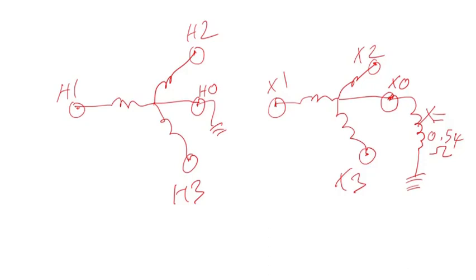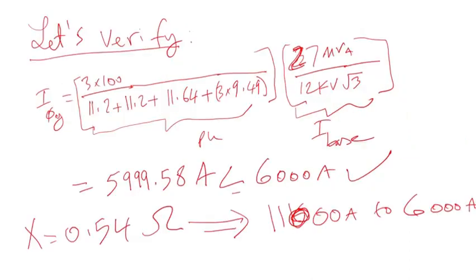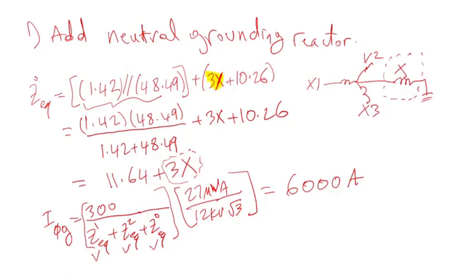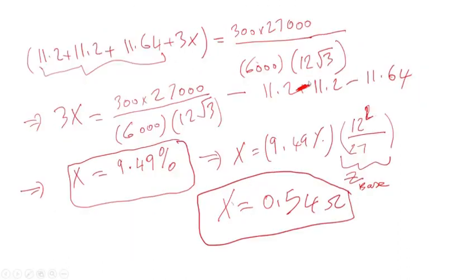Hello and welcome to Engineering Samples. In this video series, you will learn how to calculate the line-to-ground fault on the low voltage side of a transformer. In this example, we calculated 11,000 amps line-to-ground fault. We then asked: how can we limit the fault current to 6,000 amps? In option one, I added a neutral grounding reactor and calculated the reactance required to limit the fault current to 6,000 amps, which was 0.54 ohms.